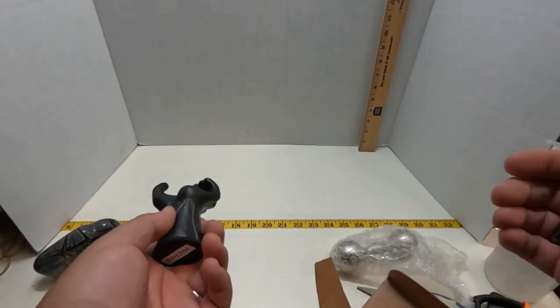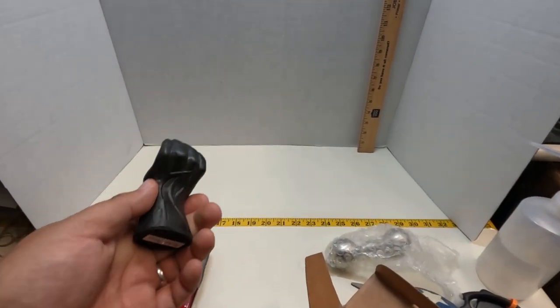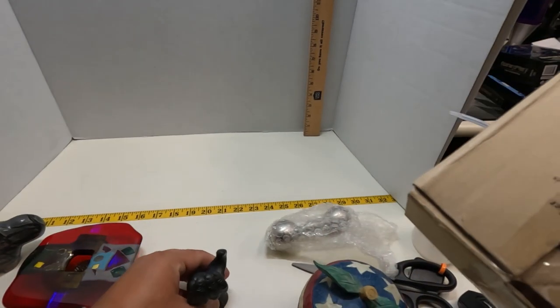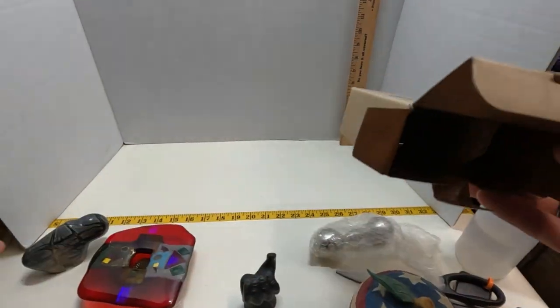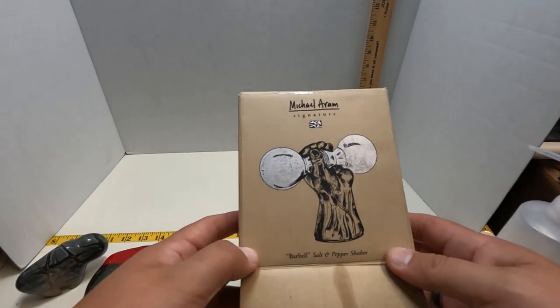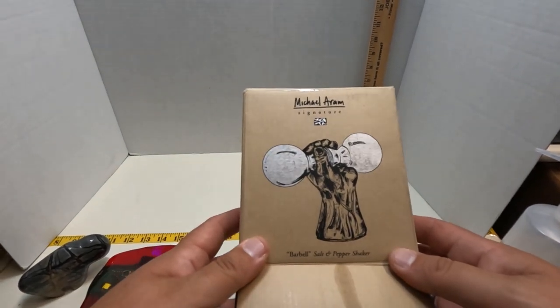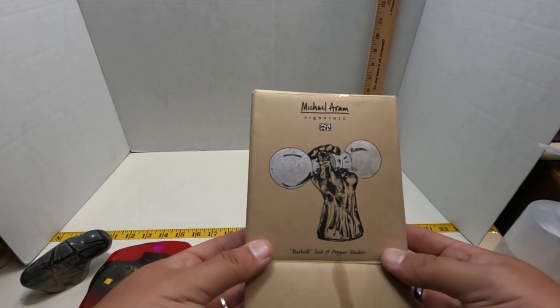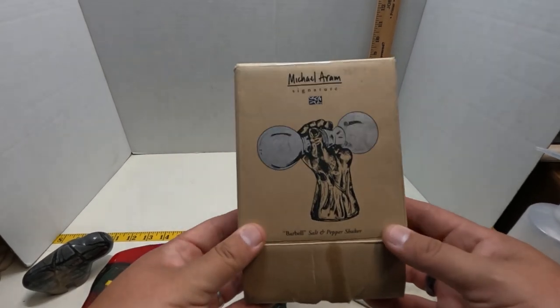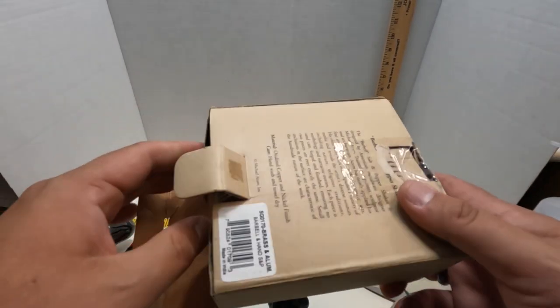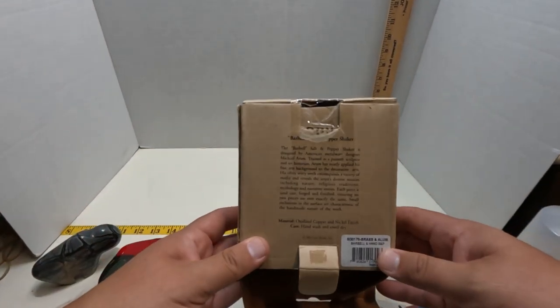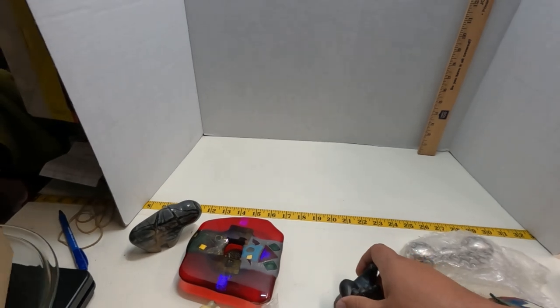We'll start off with this first item because this is probably the most valuable one here on the table right now: Michael Aram barbell signature salt and pepper shaker. I think it's new. I was checking it out earlier, doesn't look like it's ever been used. There's the back of the box, it is heavy.